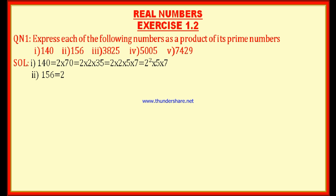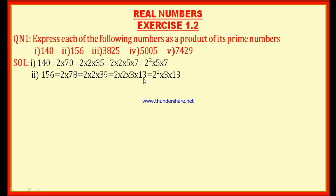Now we solve the second bit: 156. Since the units digit is 6, it is divisible by 2. So 156 = 2 × 78, and 78 = 2 × 39, giving 2 × 2 × 39. Now 39 is not divisible by 2, but it is divisible by 3: 3 × 13. Therefore, 156 = 2² × 3 × 13.